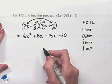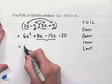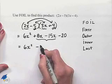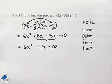Now we're going to combine our like terms. We notice that in our inner and outer terms, we can take those and combine them. 8x minus 15x is going to be negative 7x. And our result then is 6x squared minus 7x minus 20.